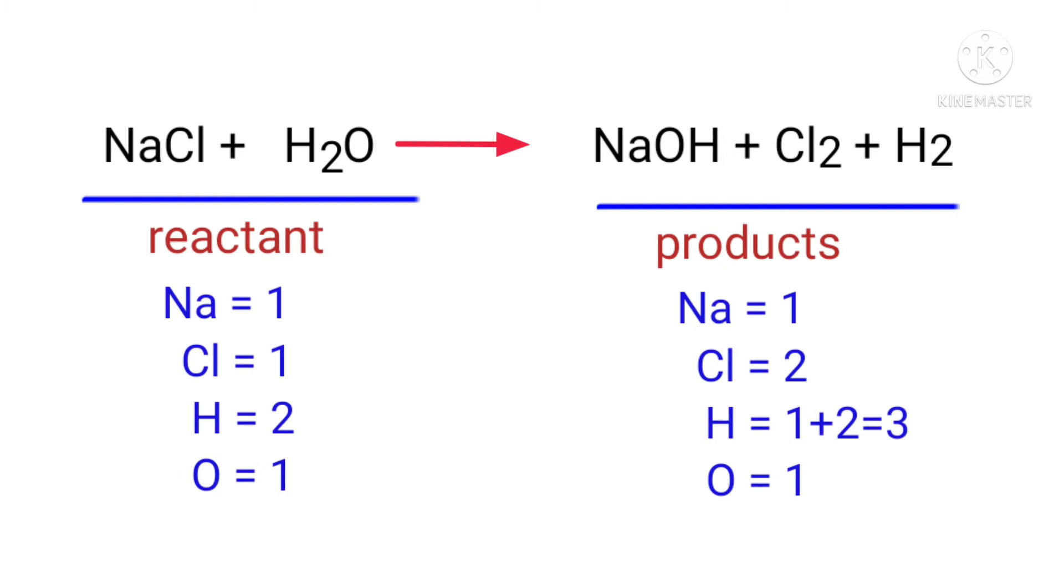In this equation, we need to balance the chlorine atoms first. To do this, we need to put a coefficient of 2 in front of NaCl. The chlorine atoms are balanced.